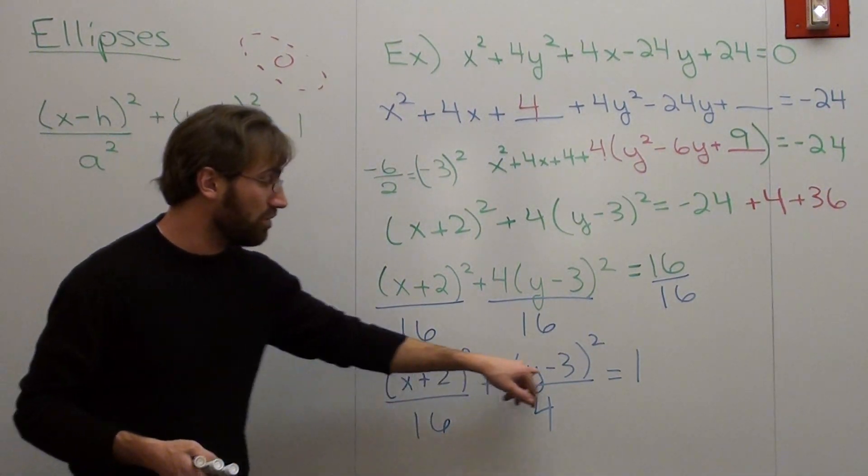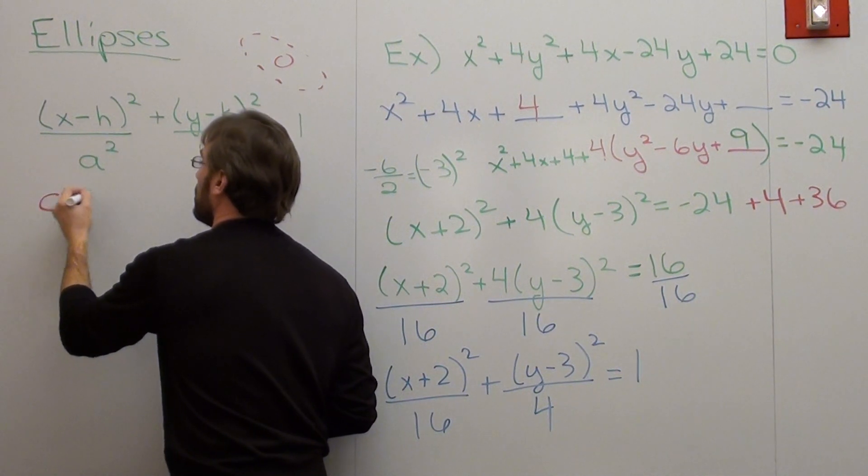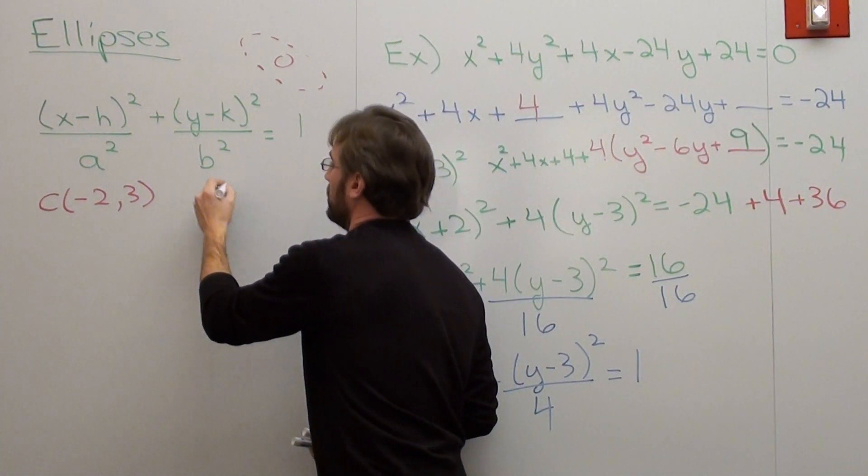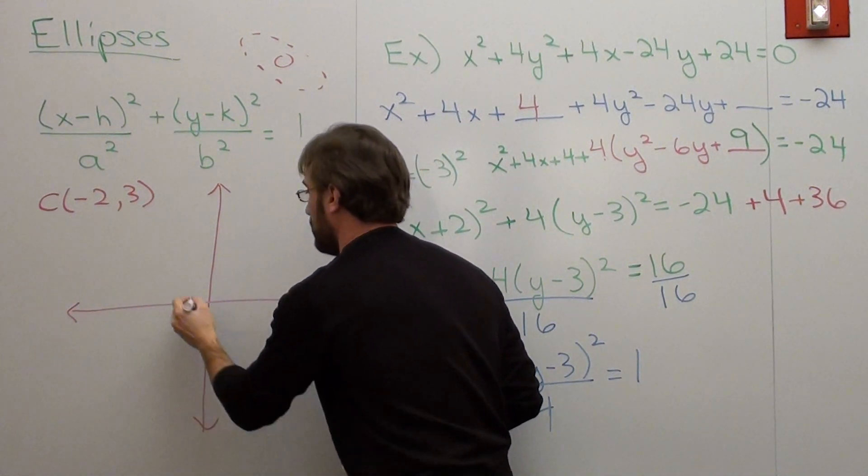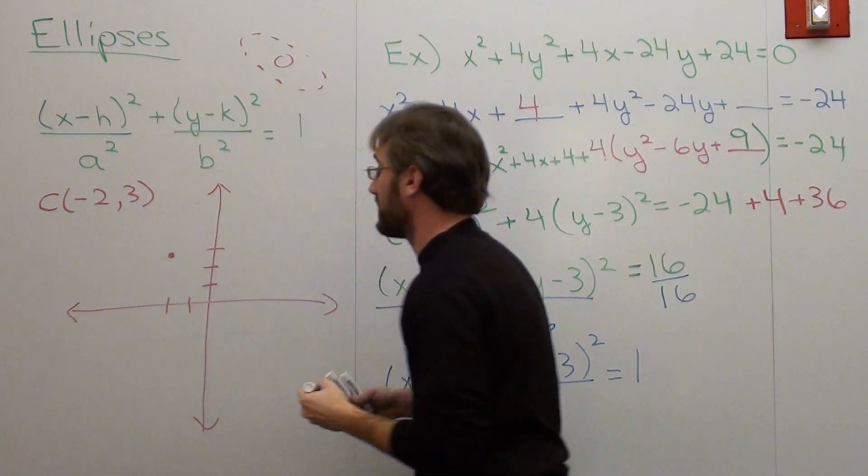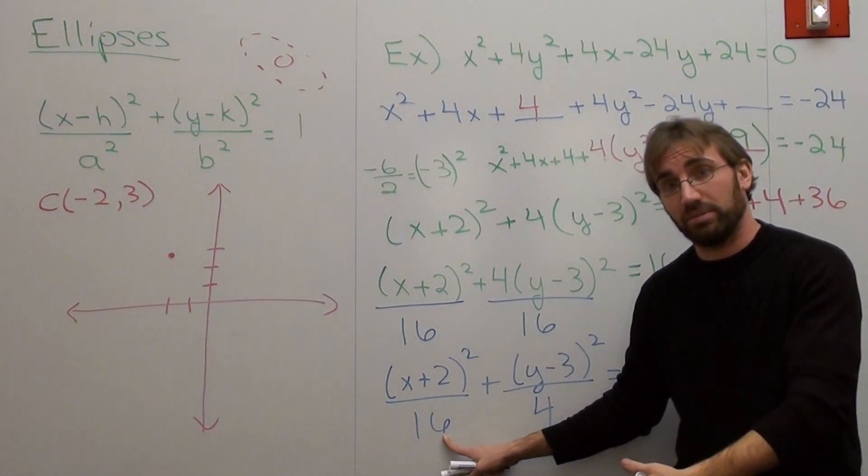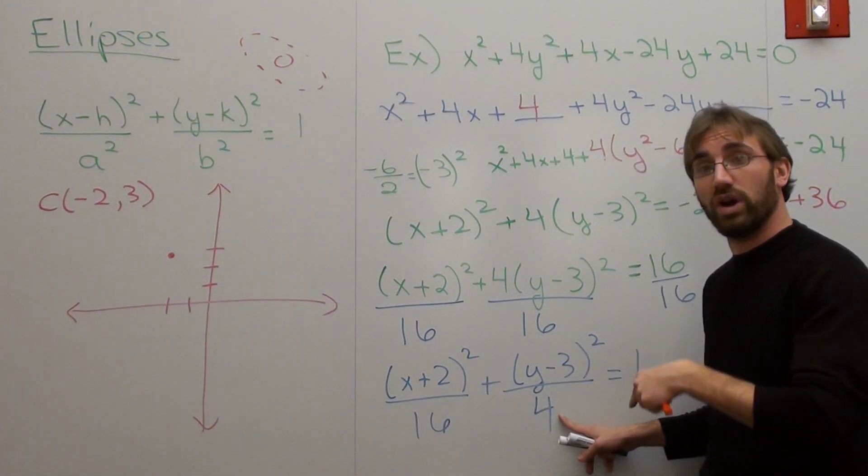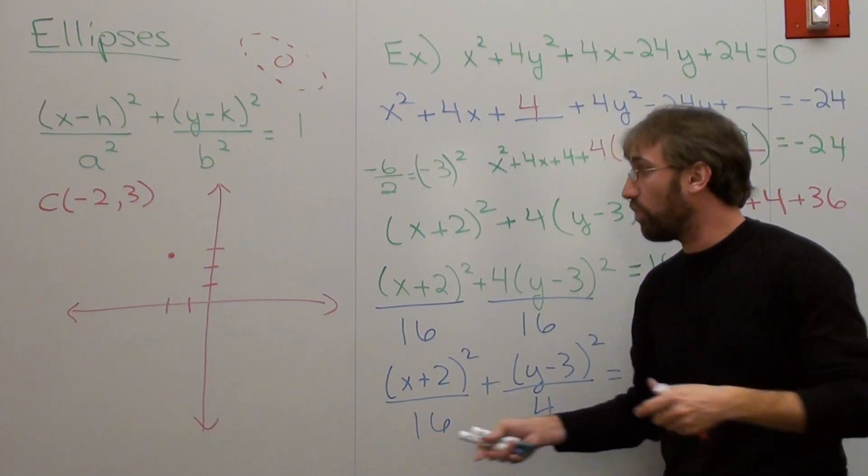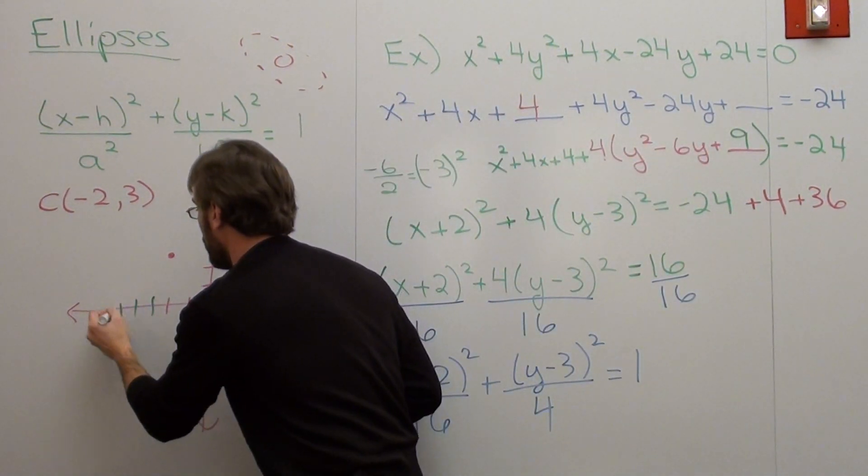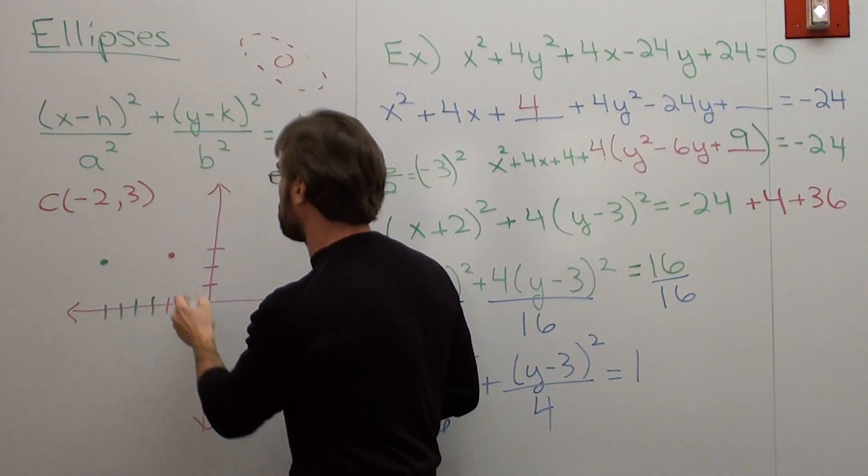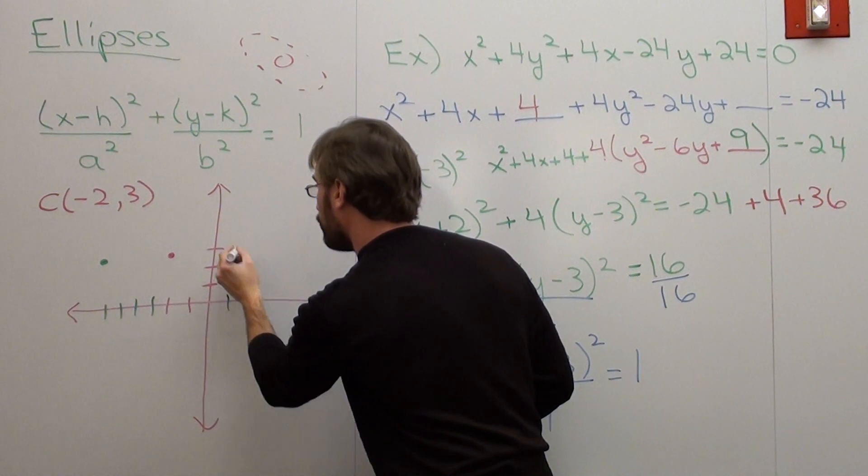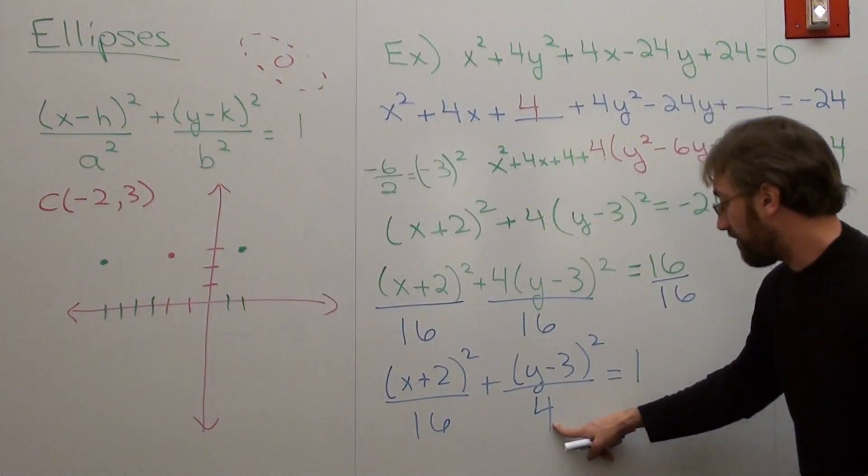Now, my center for this ellipse is -2, 3. So that's what I'm going to do. I'm going to graph this bad boy out. That's where my center is. Now, for my x values, I take the square root of this number, and it will give me how far it is from the center to the left and to the right. And it's for the left and the right because it goes with the x value. And this one, I take the square root, and it will determine how far it is from the center, both up and down. So this one's 4 away, to the left and to the right. 1, 2, 3, 4. And from this one, it's 2 spots up and 2 spots down, because I take the square root of this number, because it's in a² and b² form.